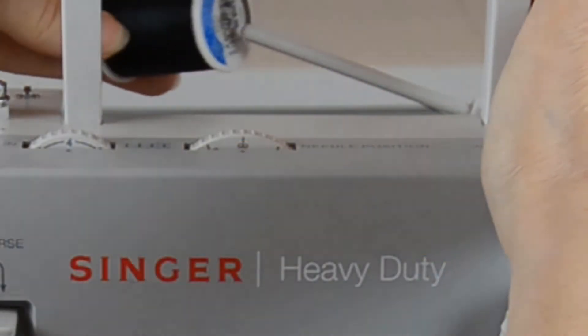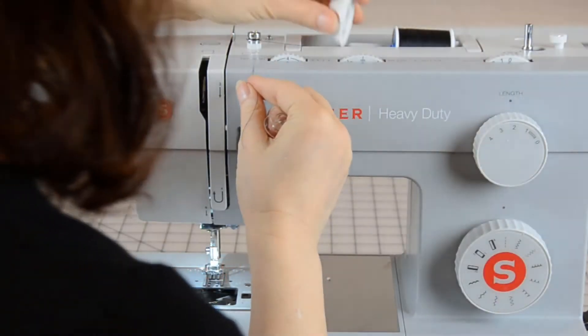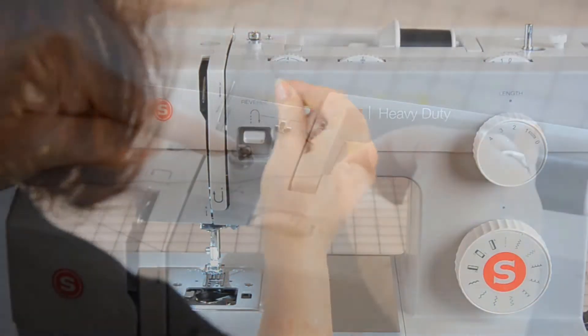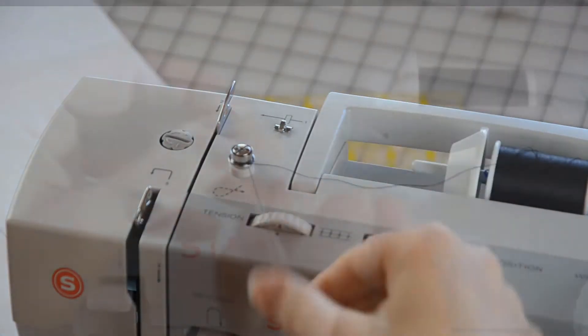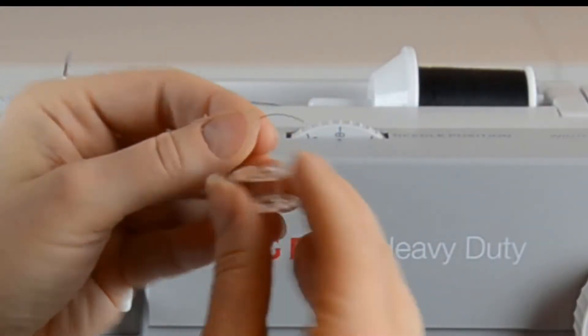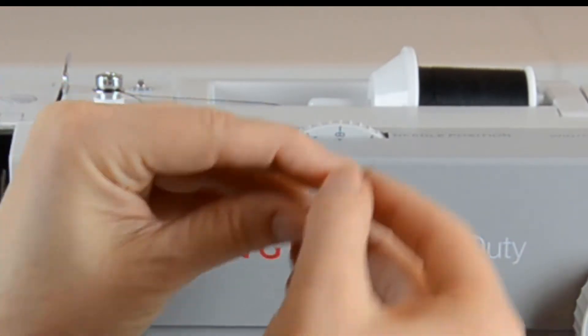First you have to wind the bobbin. Put the thread on the spool pin. Slide the cap on to secure the thread. Bring your thread around the post as illustrated on top of the machine. Hold your bobbin, thread through one of the holes in the bobbin, and put it onto the bobbin winder.